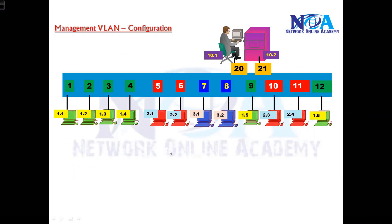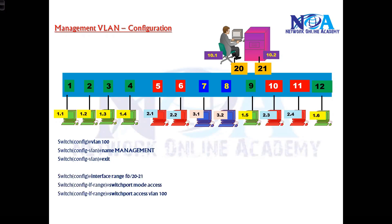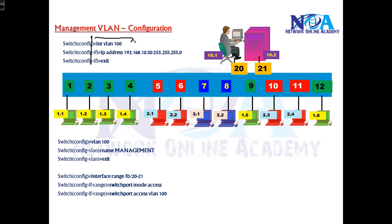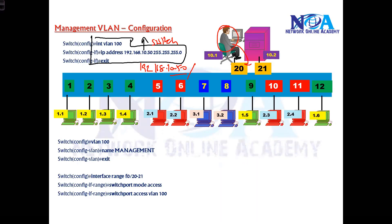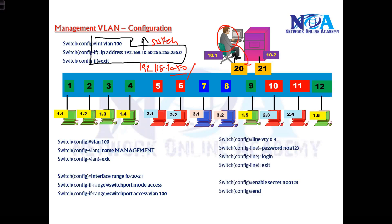Configuration-wise, we need to create VLAN 100 and give it the name 'management' — same as creating any normal VLAN. Then we assign port numbers 20 and 21 to VLAN 100. Next, we configure an IP on interface VLAN 100 using 192.168.10.50 as the switch's IP address. We also need to configure the VTY password and enable password for verifying telnet access. The management VLAN uses the same commands as any other VLAN; the difference is it's dedicated solely for management traffic.